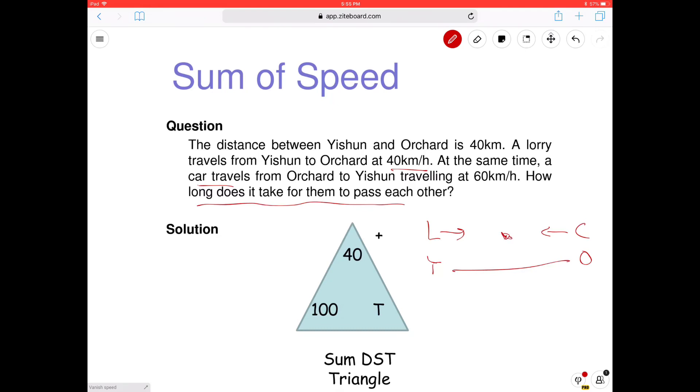Okay. So what is the lorry speed? 40. And what is the car speed? 60. Okay? This is a plus sum. Why? Because they are trying to meet. They are coming towards each other. What you have to do is to add them. That means you take 60 plus 40. You add their speed. Okay. So it goes to 100.